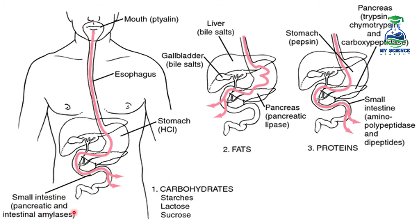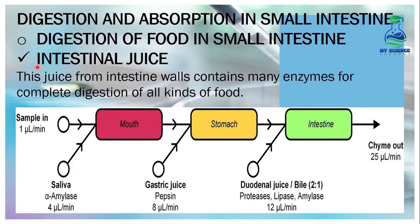Pancreatic and intestinal amylases break down complex carbohydrates into simple sugars. Bile salts and pancreatic lipase help fat molecules in digestion. Trypsin breaks down protein molecules in the small intestine and converts them into shorter polypeptides and dipeptides. The third secretion is the intestinal juice, which contains many enzymes — proteases, lipases, and amylases — for the complete digestion of all kinds of food, including proteins, carbohydrates, and fats.